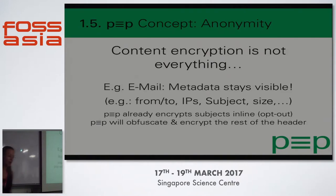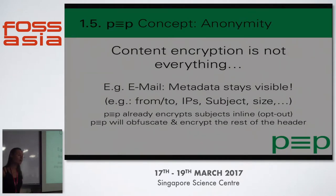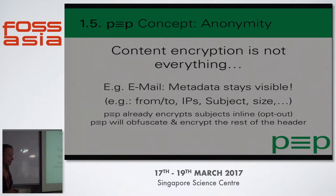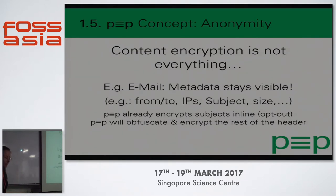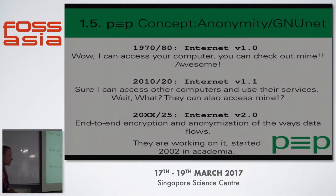Another part of the concept is anonymity. Content encryption is not everything — email metadata stays visible: the subject, from, to, IP addresses from when you connect to your SMTP or IMAP server, the message size. What we already do is encrypt the subject inline — Thunderbird can already handle this. You put the subject in the body and the client puts it back into the subject field. We also try to obfuscate and encrypt as much as possible from the header.